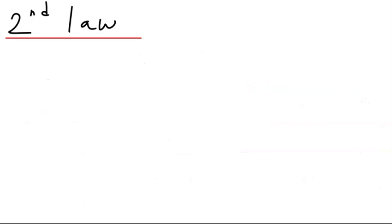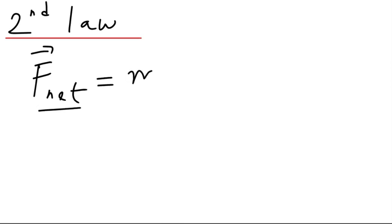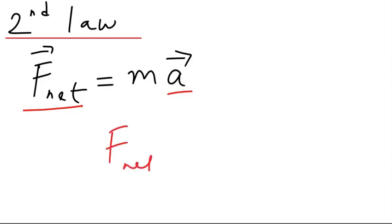This brings us to the second law, which states the net force acting on a body — the word 'net' is important — equals mass times the acceleration of the body. So when there is no net force, there is no acceleration. The net force controls the acceleration, or the acceleration produced in a mass is proportional to the net force imparted on it.